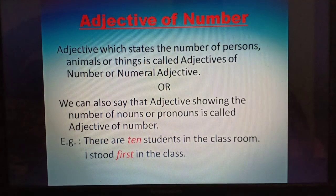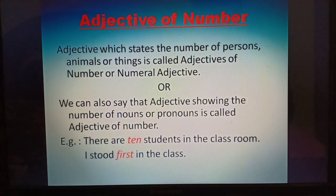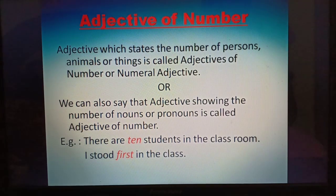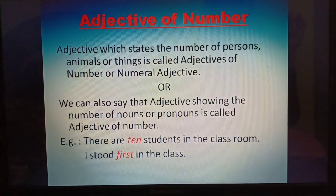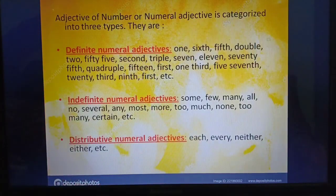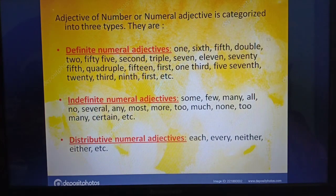Now we will see adjective of number. An adjective which states the number of persons, animals, or things is called an adjective of number, or numeral adjective. For example: there are 10 students in the classroom — here 10 is the adjective. I stood first in the class. Adjective of number is categorized into three types: definite numeral adjectives, indefinite numeral adjectives, and distributive numeral adjectives.